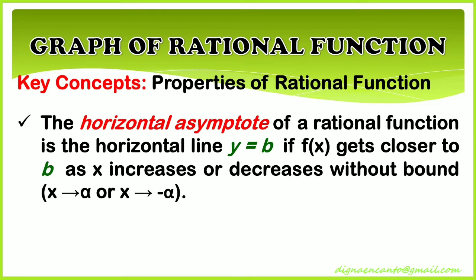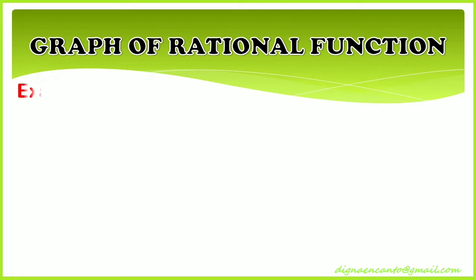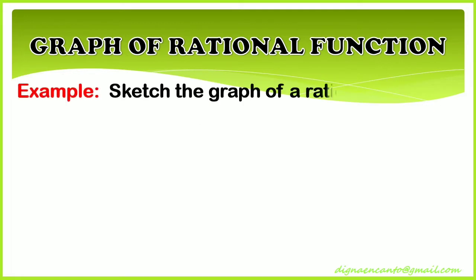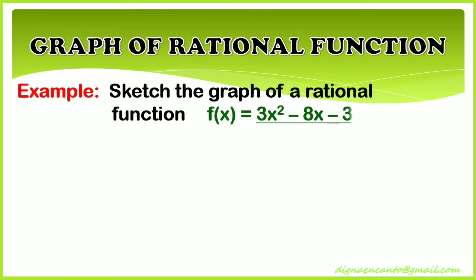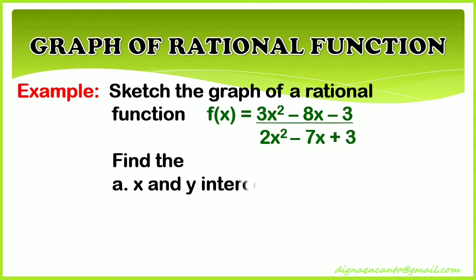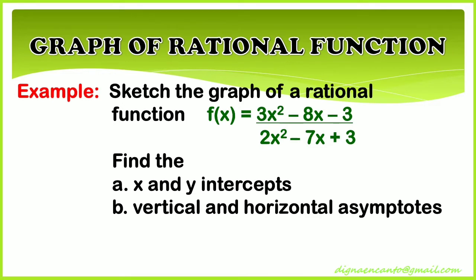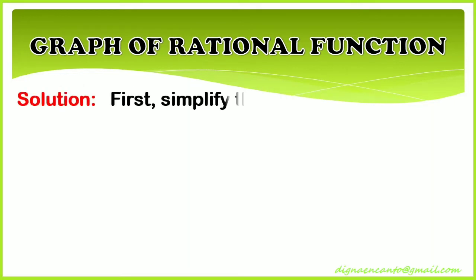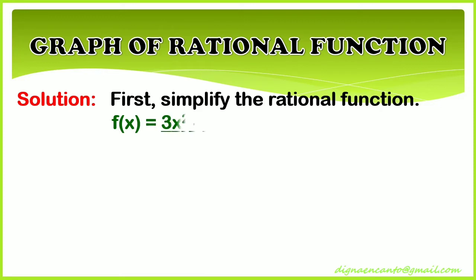Here is an example: sketch the graph of the rational function f(x) = (3x² - 8x - 3) / (2x² - 7x + 3). Find: (a) the x and y intercepts, and (b) the vertical and horizontal asymptotes. For the solution, first simplify the rational function.